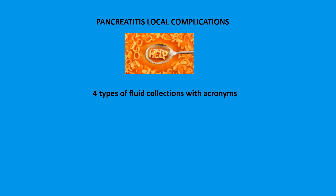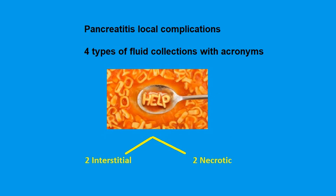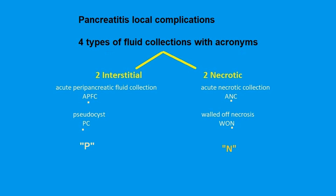There are four types of fluid collections with acronyms. We divide them into two that are interstitial and two that are necrotic. The acute peripancreatic fluid collection (APFC) is pretty self-explanatory and may go on to a mature pseudocyst — both have the letter P. The necrotic collections: acute necrotic collection (ANC), which after two weeks may mature into walled-off necrosis — both have the letter N. Hopefully that helps.